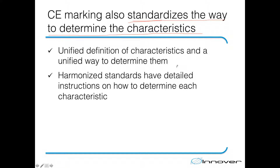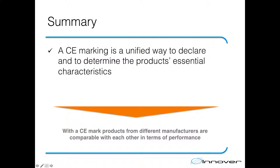With CE marking there is a unified way — a unified definition of each and every characteristic presented in the CE marking — and a unified way to determine them. So the products actually become comparable with each other. The harmonized standards have detailed instructions on how to determine each characteristic and also what characteristics can be presented in the CE marking. As a summary, CE marking is not a quality mark but a unified way to declare and determine a product's essential characteristics.